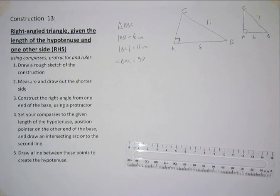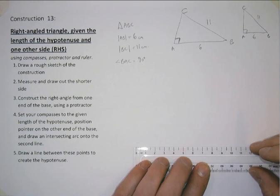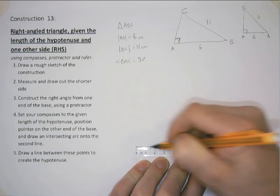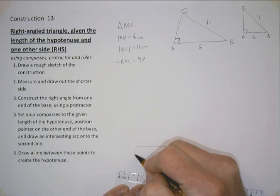So the first thing we will do is draw our first side which is the shorter side which is 6cm long. And that's AB.